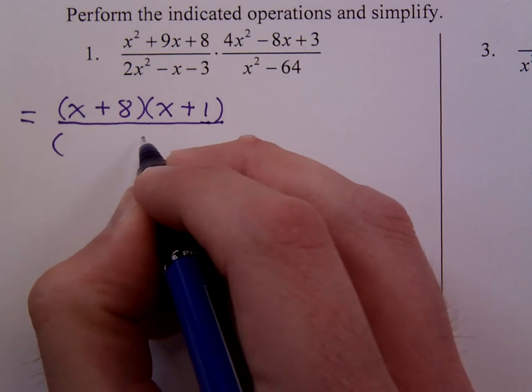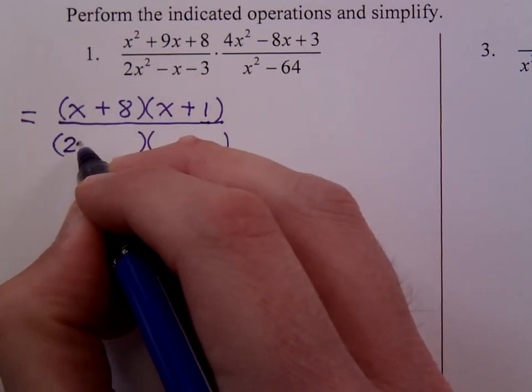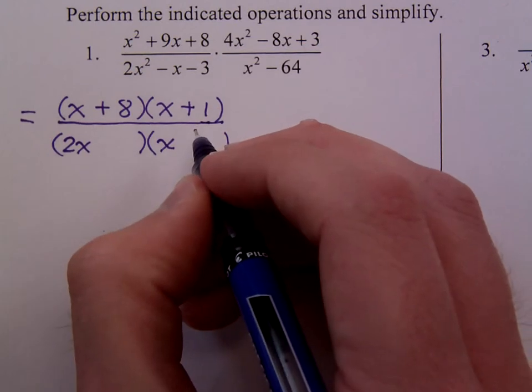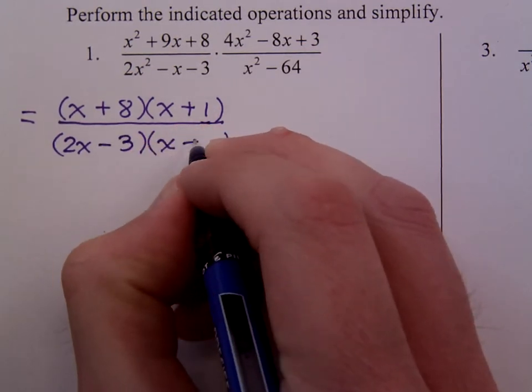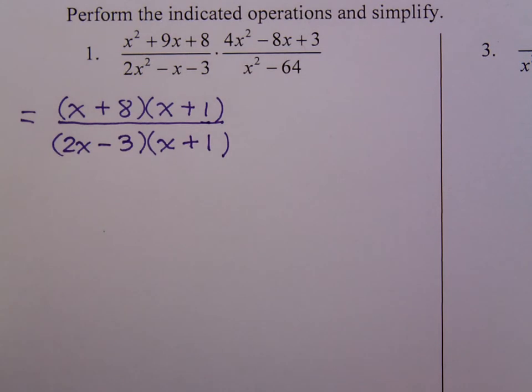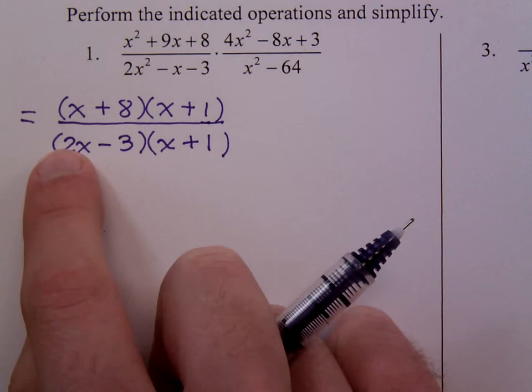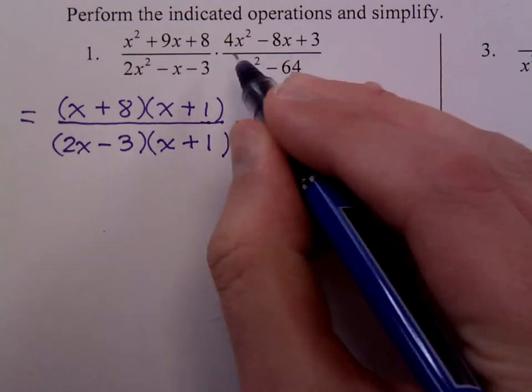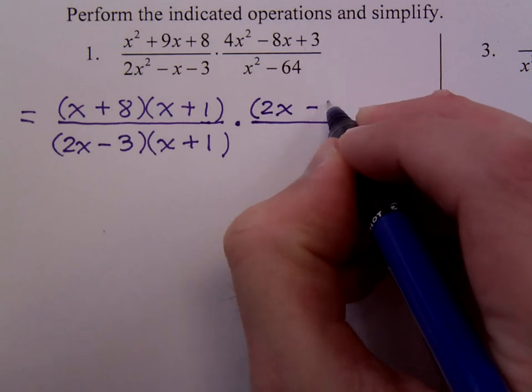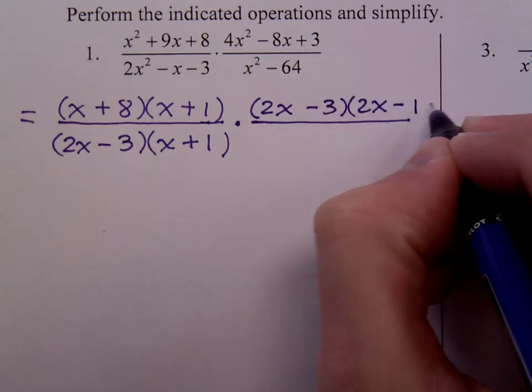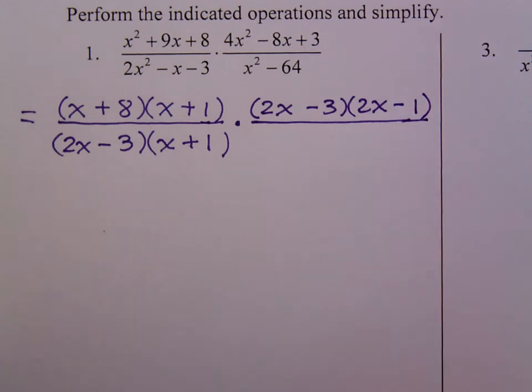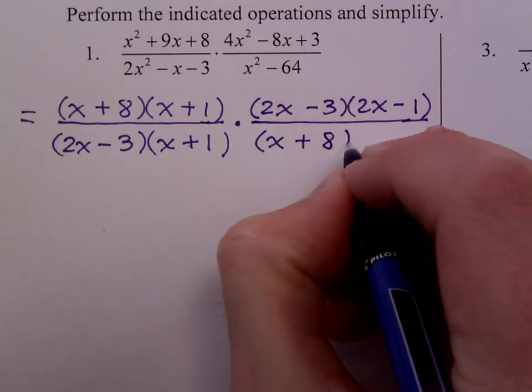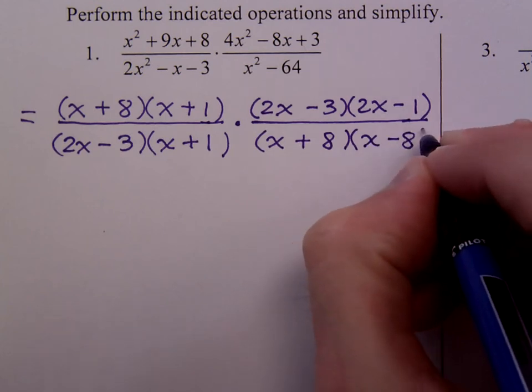This denominator is a trinomial, so I expect it to factor as two binomial factors. 2x squared breaks down as 2x and x. In order to get a negative 1x in the middle, we need to have a negative 3 here and a plus 1 here. Make sure that this checks out. This is a negative 3x plus 2x, so that gives you a negative x.